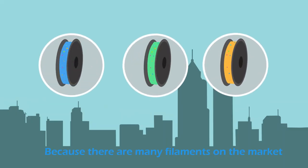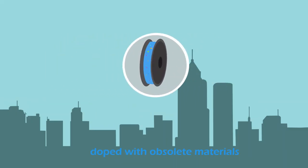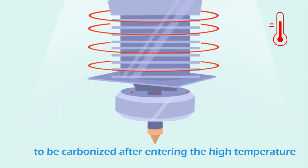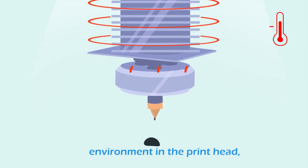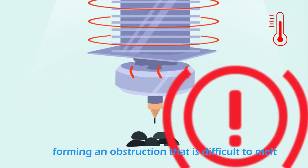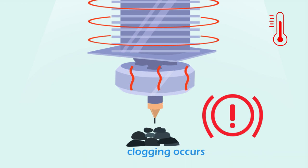Because there are many filaments on the market dealt with obsolete materials and contain a lot of impurities, these low purity filaments are very easy to be carbonized after entering the high temperature environment in the printhead, forming an obstruction that is difficult to melt. Plugging occurs.